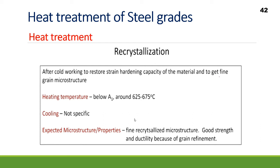Recrystallization annealing is performed after cold working to restore the strain-hardening capacity of the material and to obtain fine grain microstructures. Heating temperature is below A1. The expected microstructure is a fine recrystallized microstructure with good strength and ductility due to grain refinement.